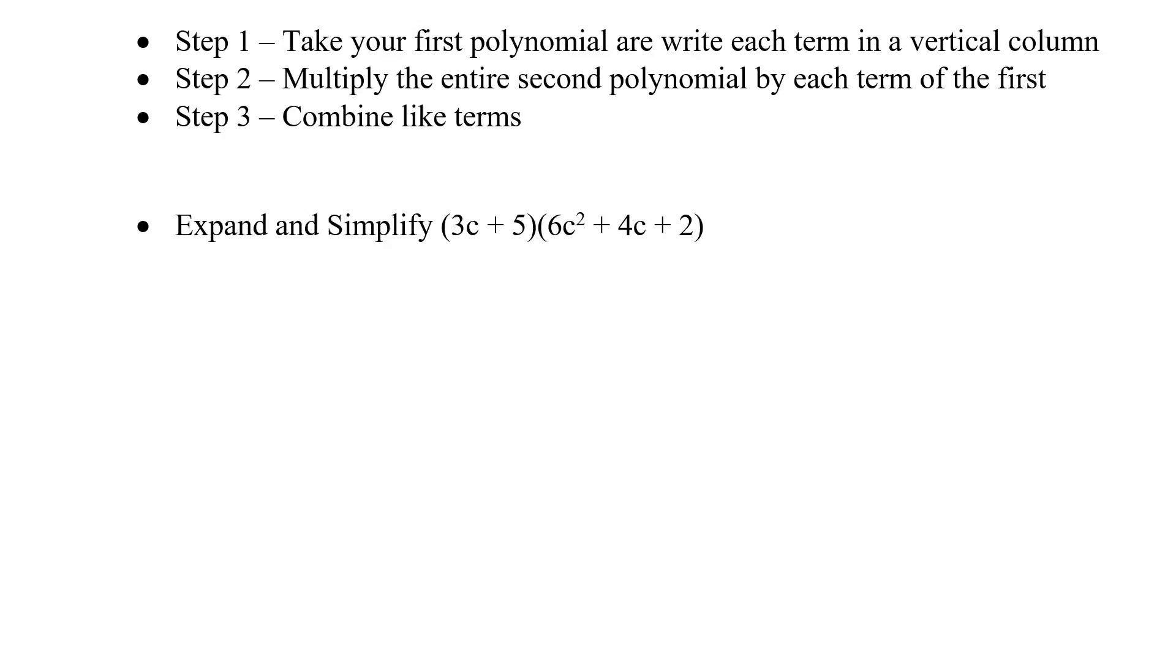Expand and simplify 3c plus 5 times 6c squared plus 4c plus 2. So take the first, in this case a binomial, but it doesn't really matter. Take the first polynomial and write the terms in a vertical column. 3c and 5. Now I'm going to take the second polynomial and multiply it by the first term. 6c squared plus 4c plus 2. Now it's distributive because we're going to take the term and go to every single part, distributed to all parts of the trinomial.